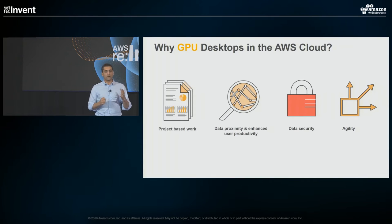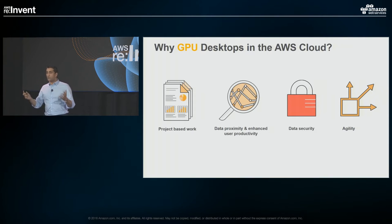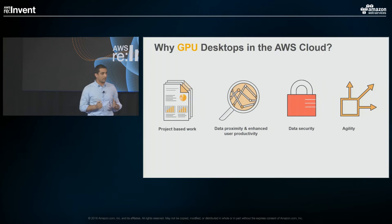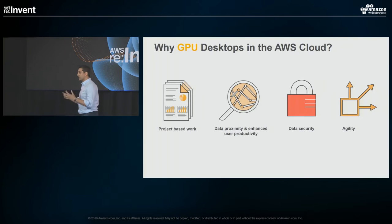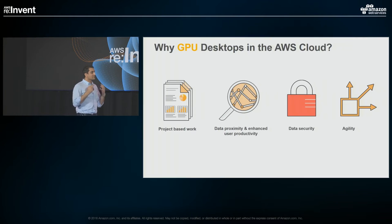Prior to these capabilities, customers relied on physical PCs or desktops — things that are hard to manage and hard to secure. The other critical piece of feedback was: we've already moved petabyte-scale data into the AWS cloud. What prevents productivity is that the computing environment is far from that data. With graphics-based workspaces, your compute lives just feet away from your data, enhancing user experience and making your users more productive.